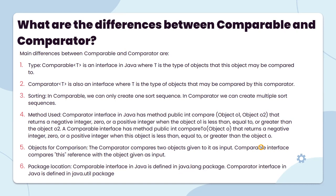Regarding sorting: in Comparable, we can only create one sort sequence. In Comparator, we can create multiple sort sequences.